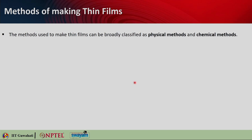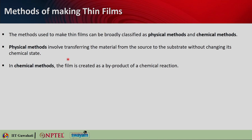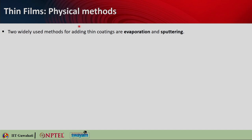Now, how do you make thin films? The process of making thin films can be broadly classified into two categories: physical methods and chemical methods. Physical methods involve transferring the material from the source to the substrate without changing its chemical state. On the other hand, in chemical methods, the film is basically created as a byproduct of some chemical reaction. Let us look into the physical methods first.